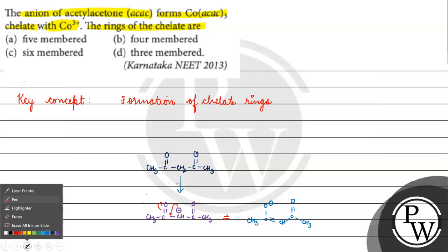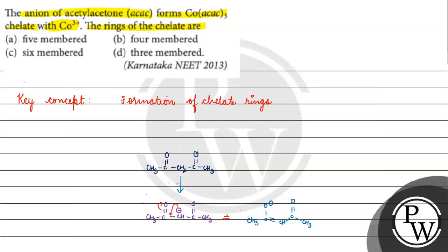If we talk about the interaction with cobalt plus 3, the electron density is given from the ligand. Let's count how many membered rings we get: 1, 2, 3, 4, 5, 6 — how many membered?